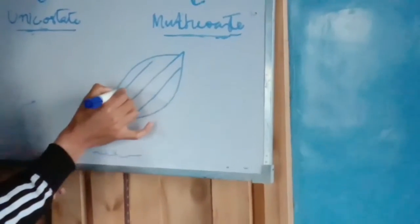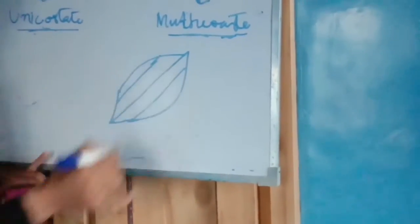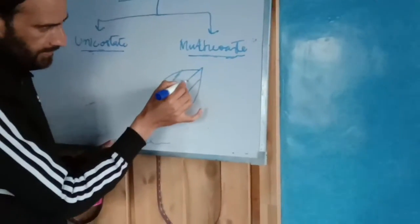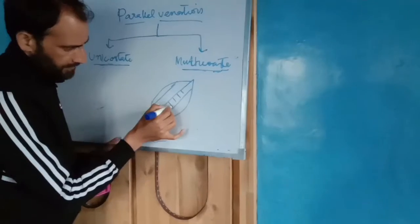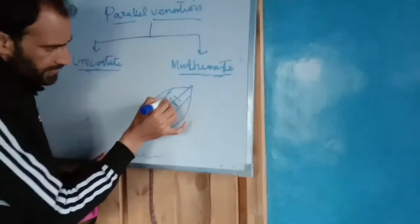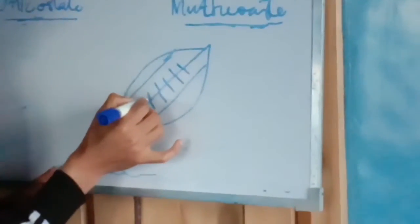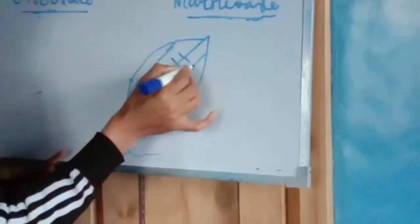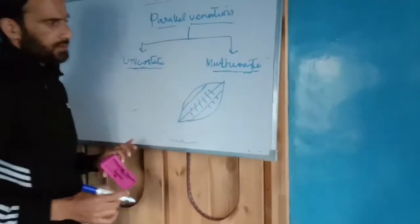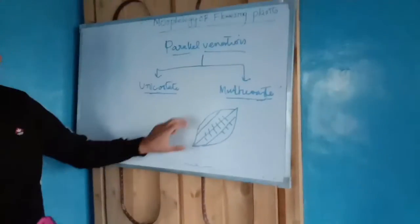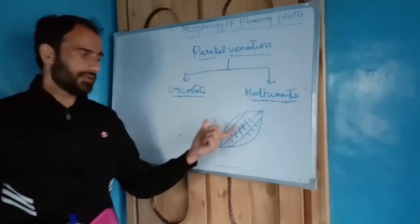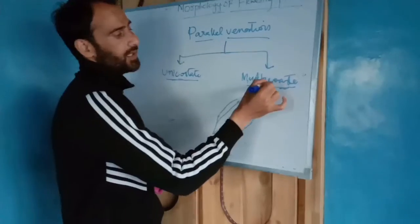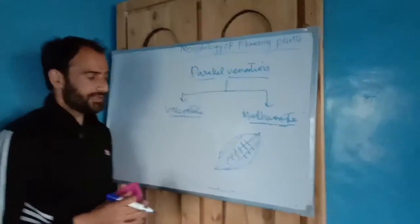These veins are branching and they run in opposite directions. There are many veins, and when branches arise, they also run in opposite directions. That is why it is called multi-costate venation.